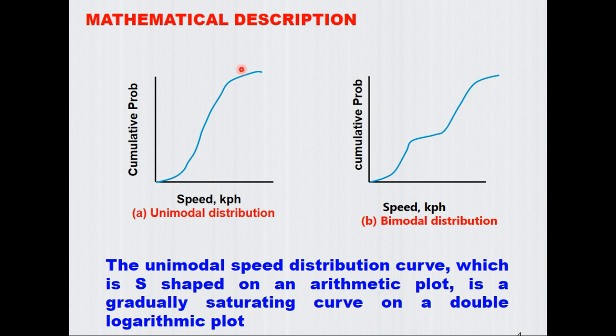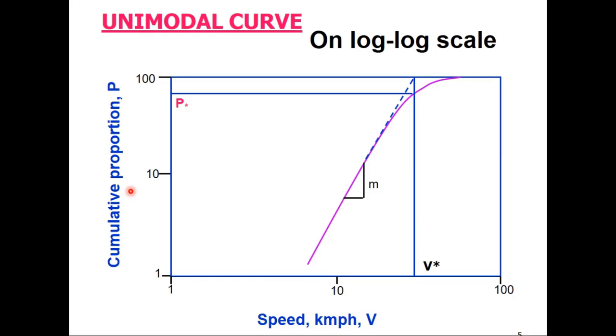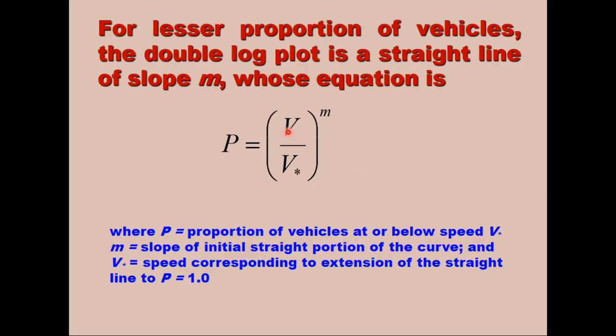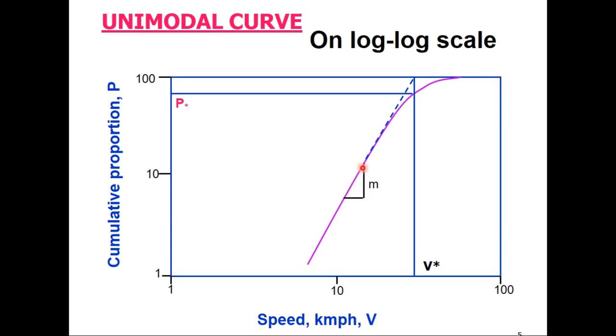When this S-shaped distribution is plotted on a log-log scale, it becomes a straight line initially and then gradually saturates to the top, that is P equals 1 or P equals 100%. The initial portion of this curve is a straight line and its equation can be written as P equals V upon V star power m. Here, P is the proportion of vehicles at or below speed V star, m is the slope of the initial straight portion of the curve.